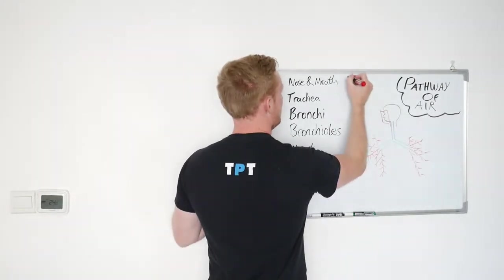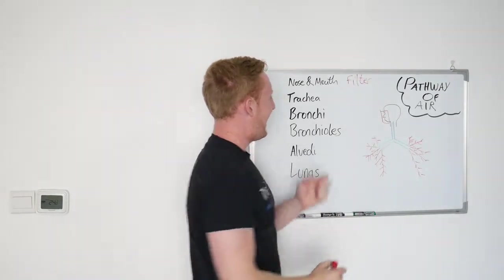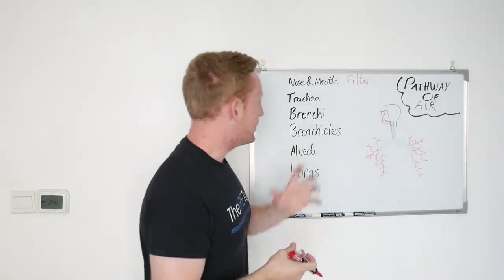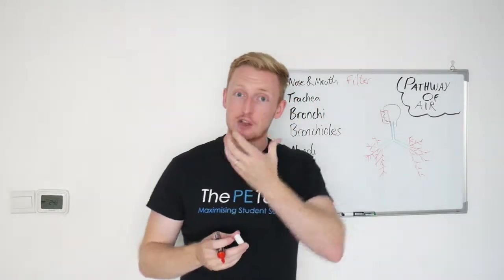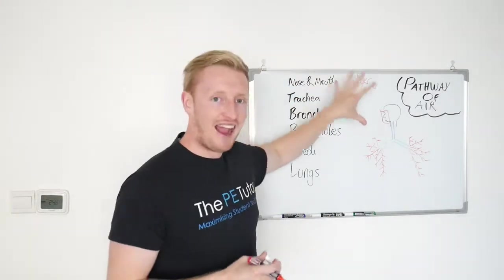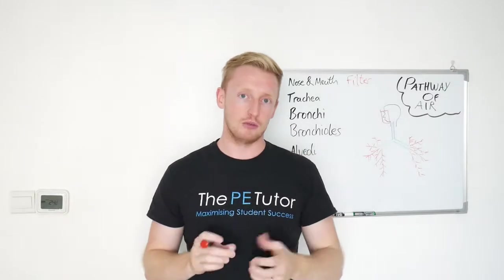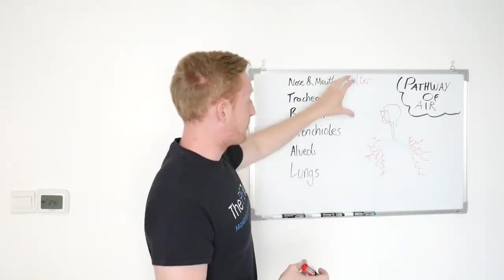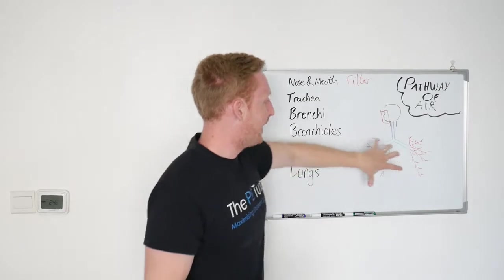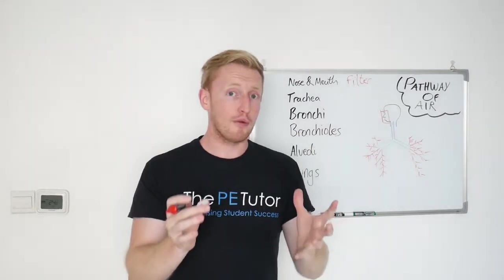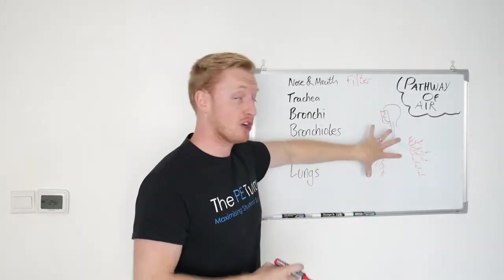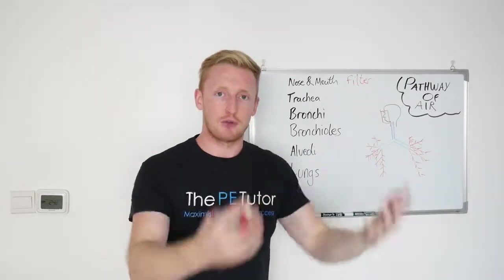In the case of the nose and the mouth, their purpose or the role that they play is the first stage of filtering. We've got little hairs inside of our nose and saliva and fluid inside of our mouth, and they're there to catch large bulky particles such as pollen to prevent them from going any further through the pathway and ending up inside the lungs.